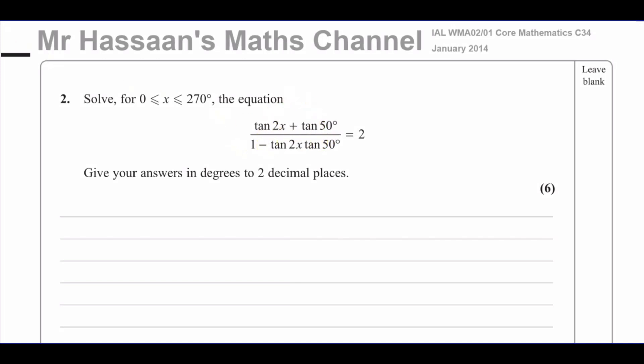However, you should be able to recognize this form. And if you look at the addition formula in your formula sheet, you should be able to recognize that the A here in the formula is like the 2x here. And the B in the formula is like the 50 degrees.